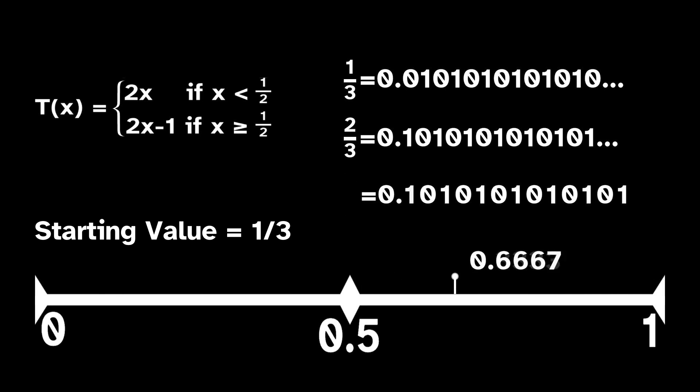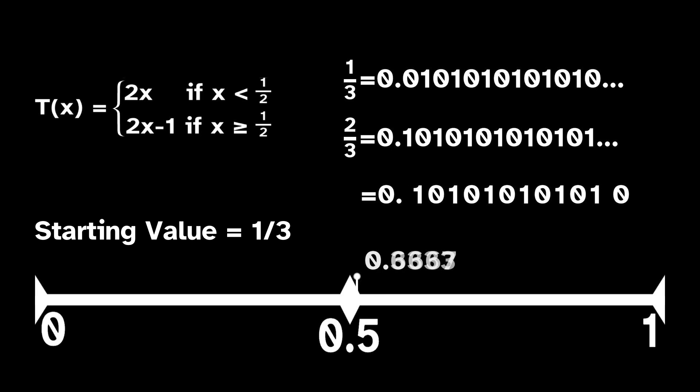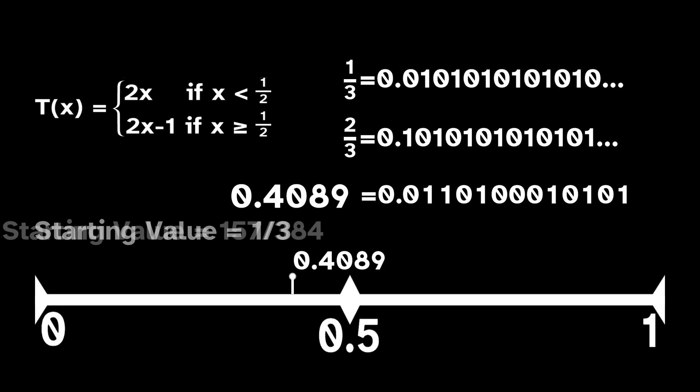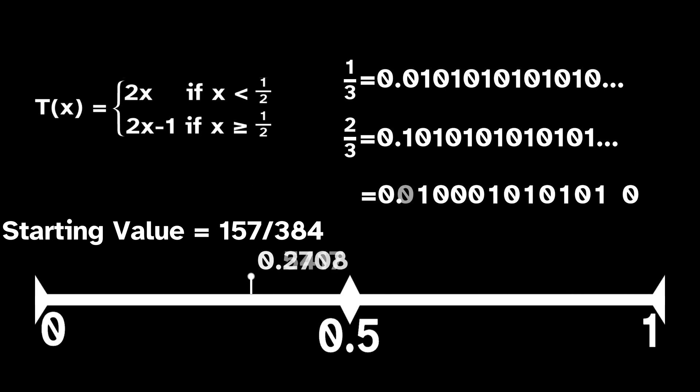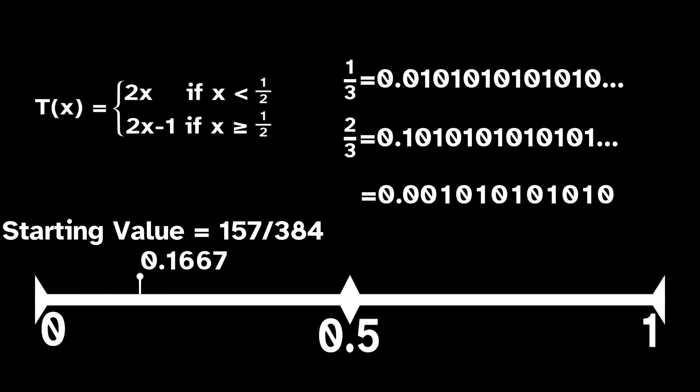The point 1 third has a period of 2, because shifting its base 2 expansion left two digits gives us back 1 third. Likewise, the base 2 expansion of our pre-periodic starting point is a sequence which, after 7 shifts, brings us to 0.0101, or 1 third again.